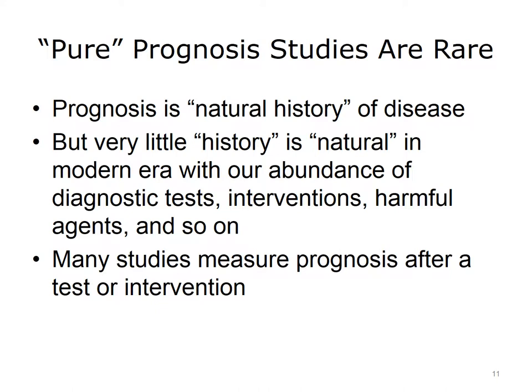Prognosis is the natural history of a disease — how the disease actually unfolds. It's hard to do a good prognosis study because in this day and age, there's very little in the history of a disease that is truly natural. In almost every disease we intervene in some way, whether through diagnostic tests or treatments. Many studies end up measuring prognosis after some form of test or intervention, and the differences between a prognosis study and a treatment study start to blur.